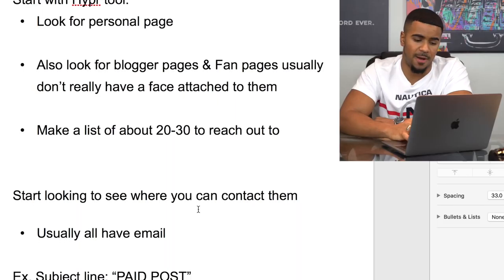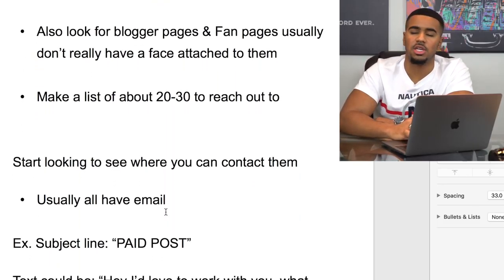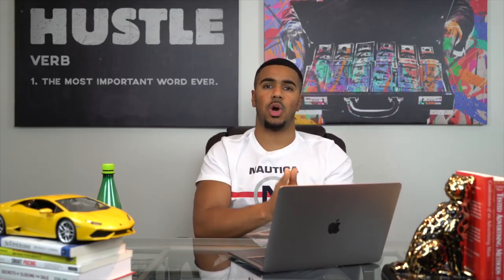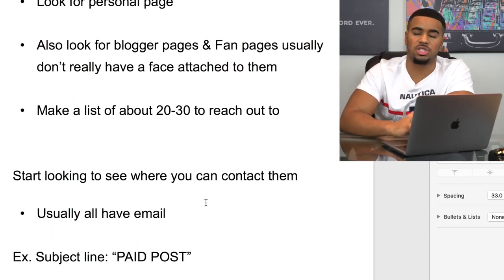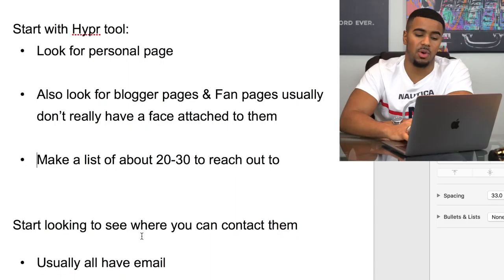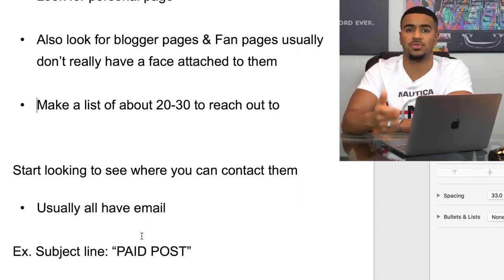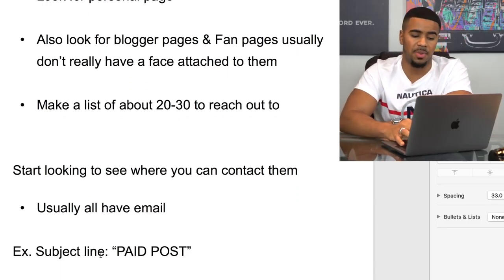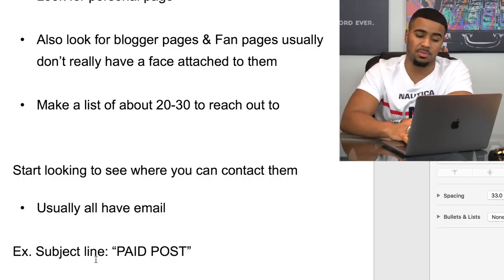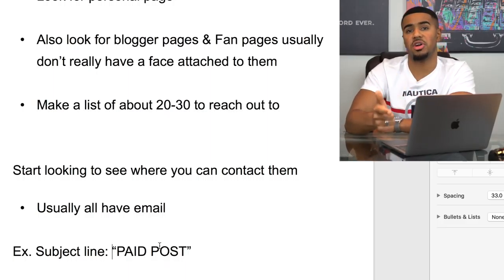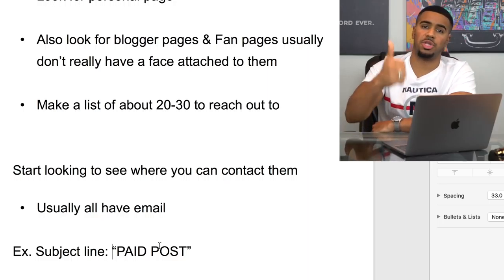Once you have a list ready, you want to start looking at where and how you can contact them. Usually they all have emails. I tried using this email template when I first got started and it worked really well. You can use it as a swipe file. You want a clear subject line — be straight up and let them know exactly what the message is for. Your subject line could be as simple as 'PAID POST' in all caps, so they know it's a potential paid deal.